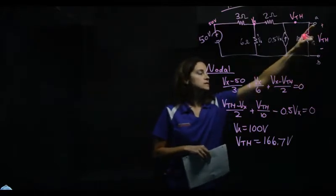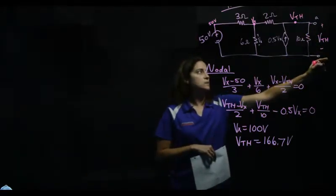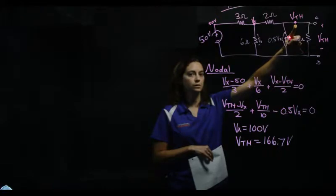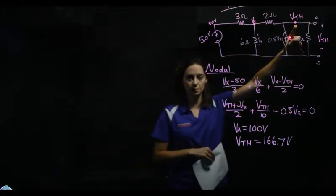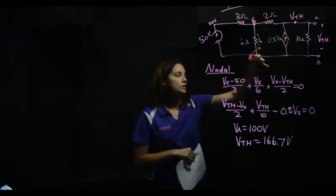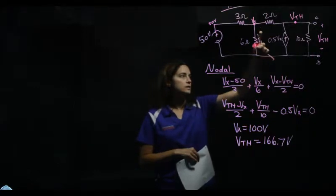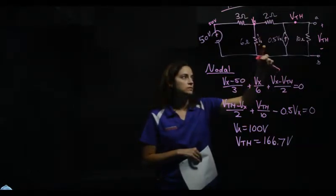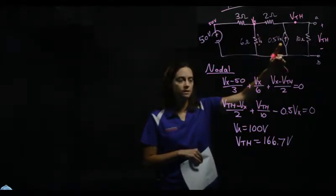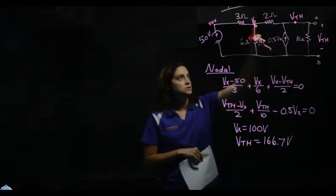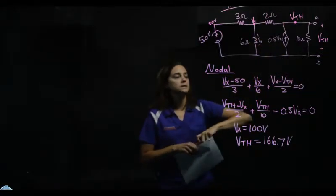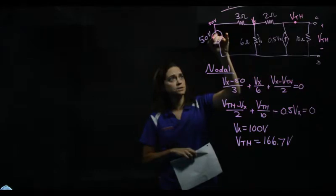V-Thevenin is out here at our location AB. So that is this node right here, V-Thevenin. It's easy just to label it as V-Thevenin. If we look here, we're given that Vx is here. We need to know that because of this dependent source. So it's easy just to label this node as Vx. And from there, it's just a simple nodal.